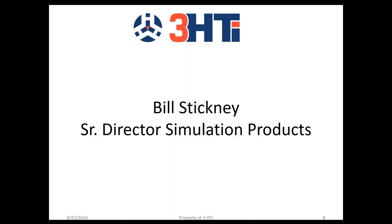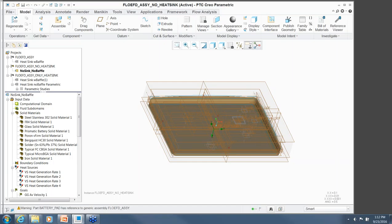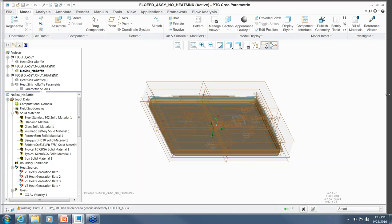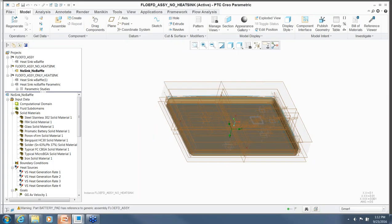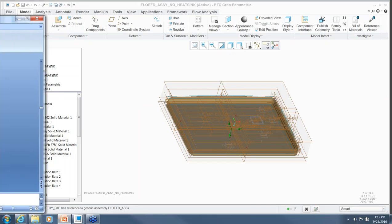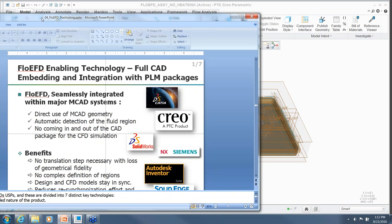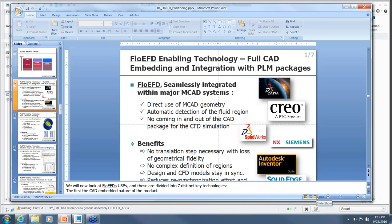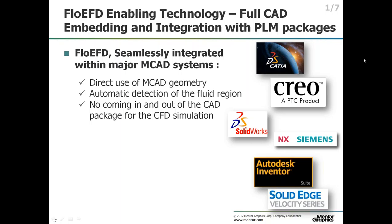Thank you, Rob. The product we're working with today is FlowEFD from Mentor Graphics. FlowEFD is a general purpose computational fluid dynamics package — it does both fluid flow and heat transfer simultaneously. It can be used for a variety of things: designing pipe fittings or valves with internal flow, electronic cooling which is an external problem bringing air in from the outside, and also strictly external problems like aerodynamics.